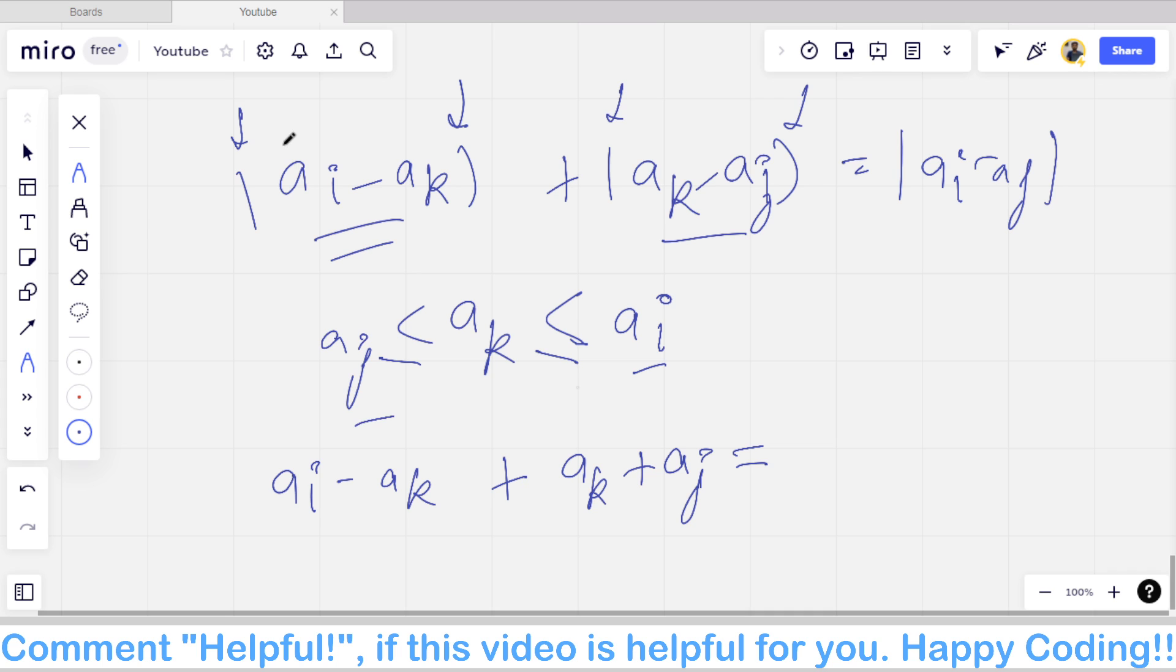And if aj is less than ak, then it will become like this only. Also ai is greater than aj, so this mod will also be removed. So in this case, this problem always holds.